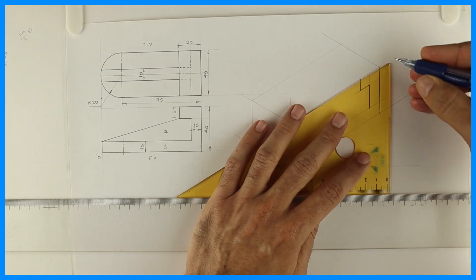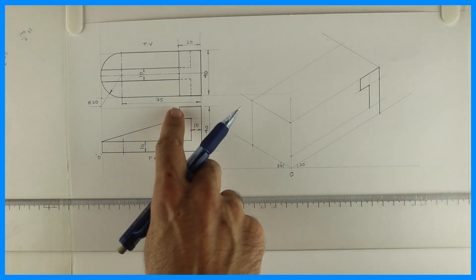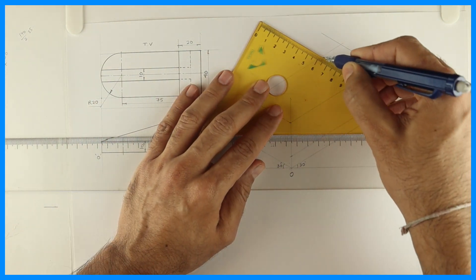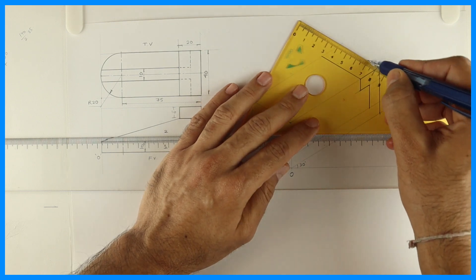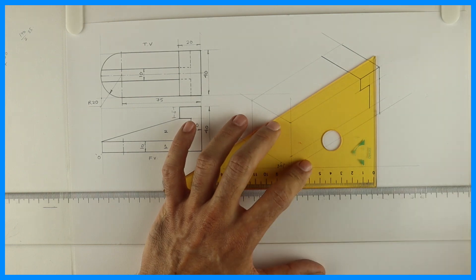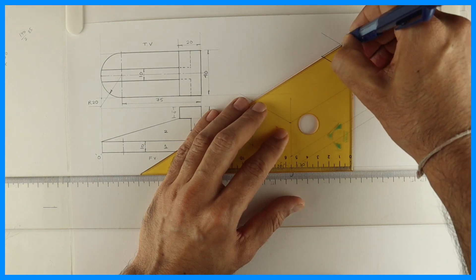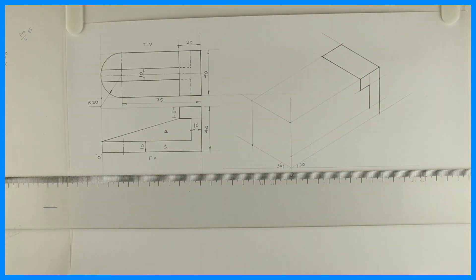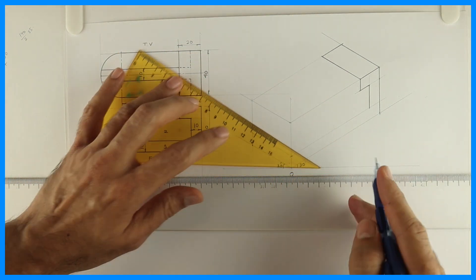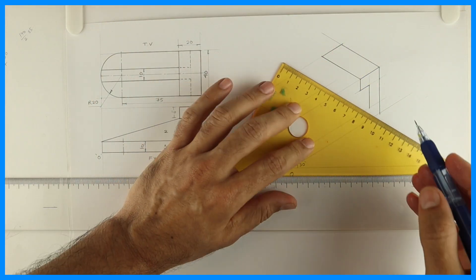Take the same part behind. How much do you have to go behind? 40. So take all the points behind by 40.